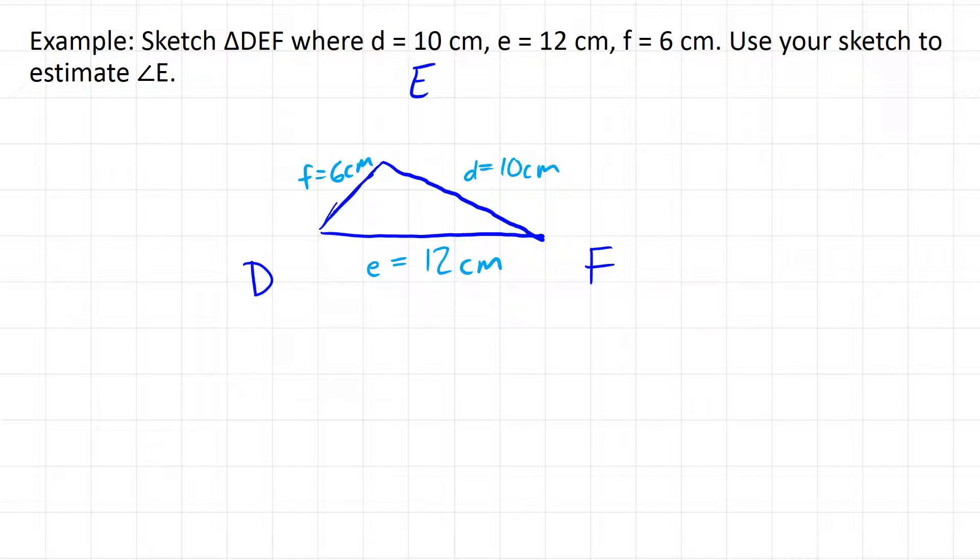And what this lets us do is it lets us finally estimate what angle E should be roughly. And now because this is going to be an estimate based off a rough sketch, it's not going to be perfect, but we can do our best. And to me, if I was to sketch this line off side f, that would be my 90-degree angle. What that means is that angle E has to be a little bit bigger than 90 degrees. And so I could estimate that angle E is probably about 100 degrees.